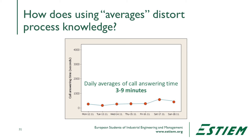Let's give an example. We're looking at a data set for the average call answer time at a call center. In a given week, the average call answer time is three to nine minutes long — that's terrible. But how do we improve it? Looking at the averages for each day, I don't know what to improve. It looks like Saturday and Sunday things got worse, but I don't know what the volume is. I don't understand the distributions and I don't understand where there is an opportunity to improve.